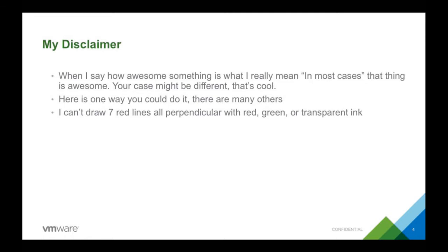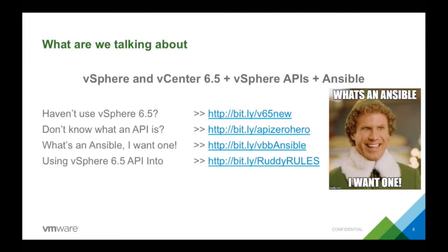My disclaimer: if I say something's cool or awesome, I mean in most cases it is — but you may certainly have a use case where it's not. This is one way you could do it; it's a pretty basic example just to get the point across. So what are we talking about? vCenter 6.5, the new vSphere APIs, and Ansible. If you've not used vSphere 6.5 yet, that first link is a series we did on vBrownBag covering all the new features. If you don't know what an API is, next week on vBrownBag we're starting a vBrownBag API Zero to Hero series, so if you've never used an API before we're going to cover that.